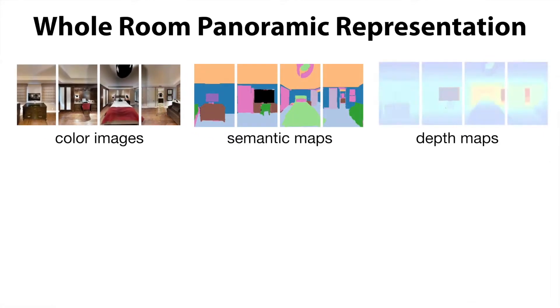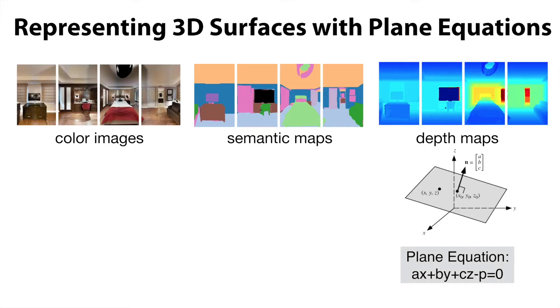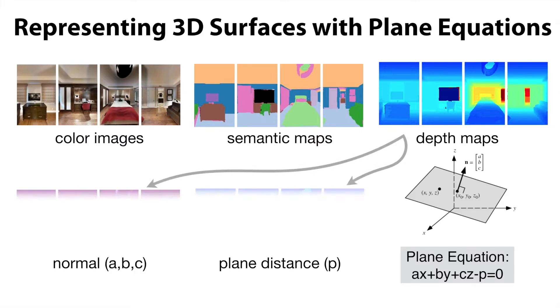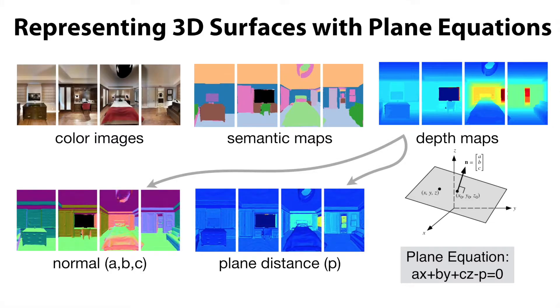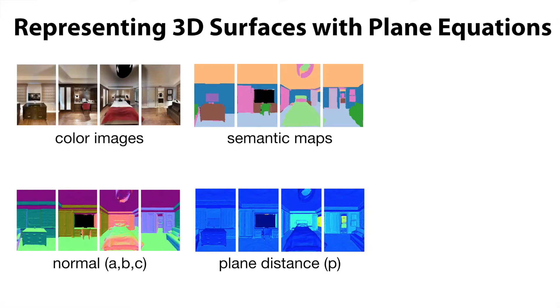Instead of using raw depth values to represent 3D structure, we represent the 3D location of each pixel using its plane equation, which consists of a surface normal and plane distance to origin. This representation is piecewise constant for coplanar surfaces, which helps the network to produce better 3D predictions than other representations.